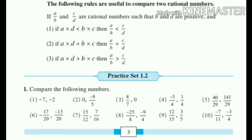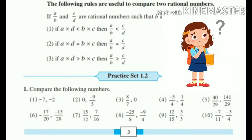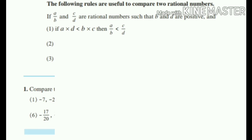If A into D is greater than B into C, then A by B is greater than C by D. This is creating so much of confusion. Wait, wait. I will teach you. Let's start with practice 1.2.